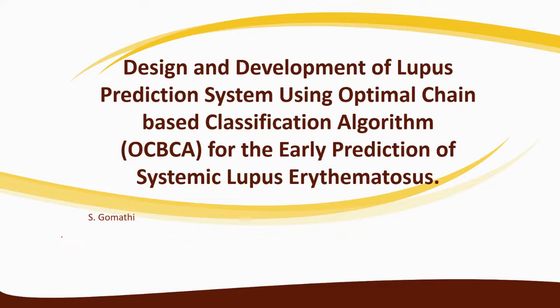Hello everybody. In this video I'm going to show you how to prepare the presentation for your second DC meeting. In the previous video I showed how to prepare for your first DC meeting. In most universities you have to undergo two meetings. The first one is to show what problems you have identified, your progress, and whether you have published any papers. The second DC meeting is about the next level of progress.